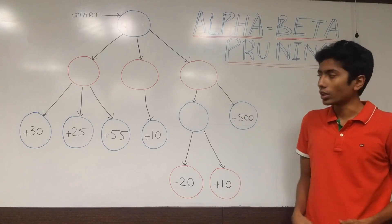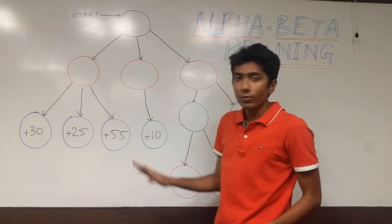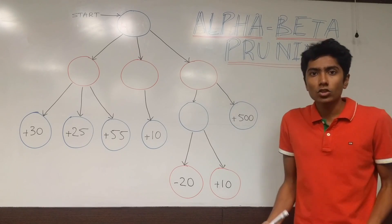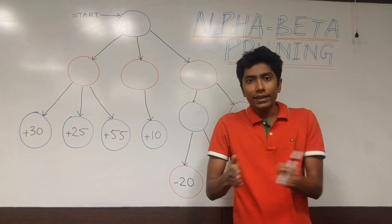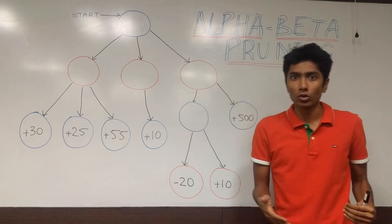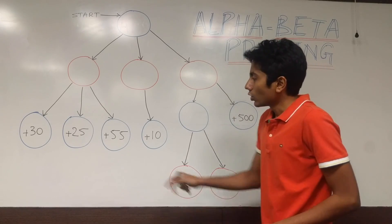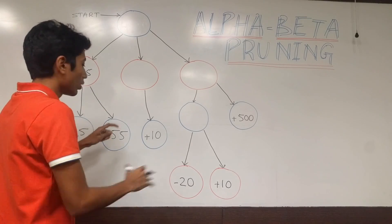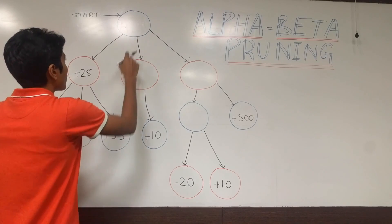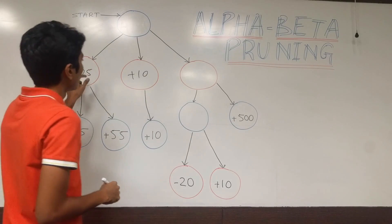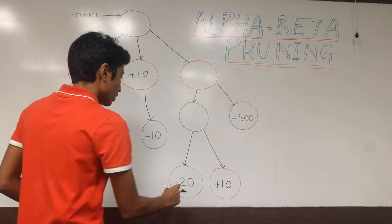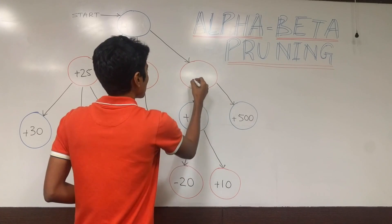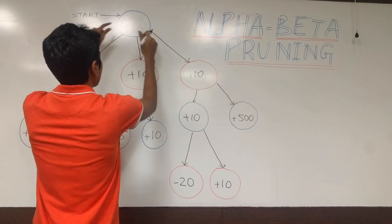You see plus 30, plus 25, plus 55 — the first player is winning in all three conditions. But red's job is to minimize the score, so amongst these three, 25 will be chosen. Now let's walk through this according to the minimax algorithm: 25 here, plus 10 is the only possible value here, blue tries to maximize — so plus 10, plus 10, plus 500 — minimize gives plus 10, and the maximum of the three is plus 25.